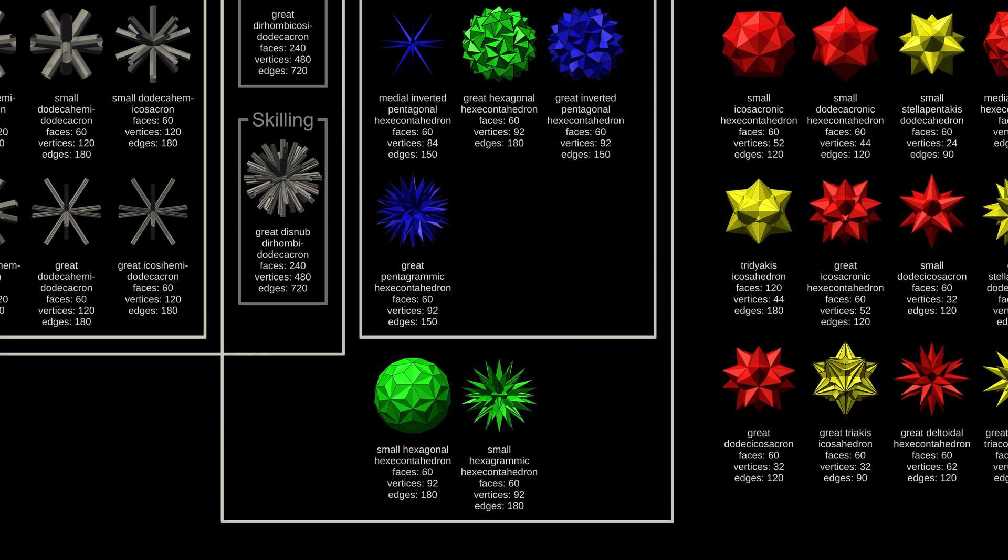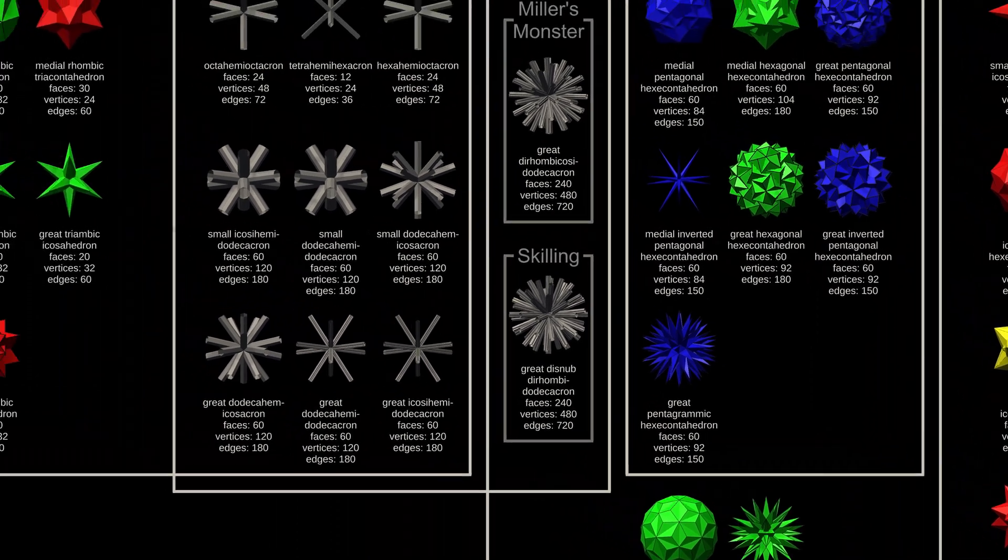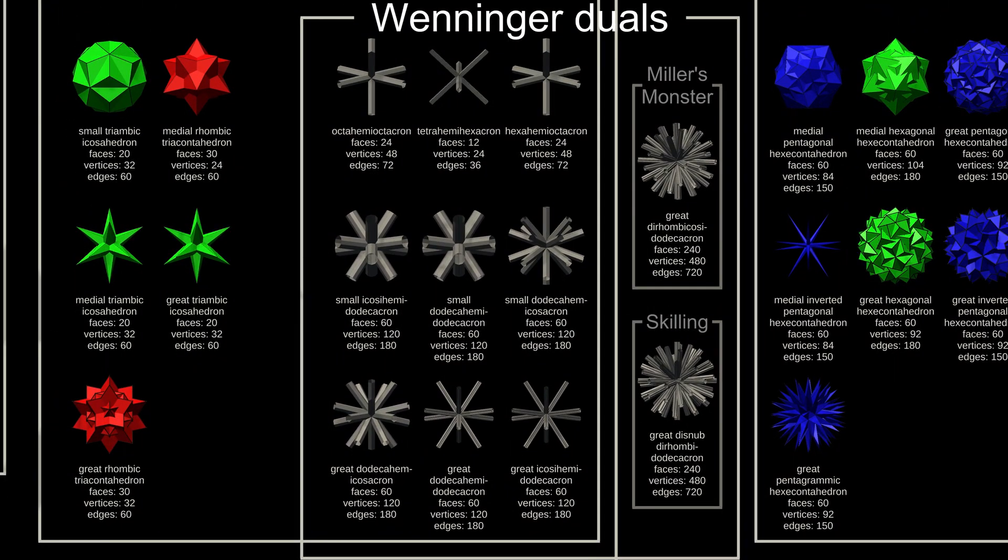The hemipolyhedra do not have duals in Euclidean space. The closest representations are the Wenninger duals, which I've shown in grey. Likewise, the dual of Miller's monster is another Wenninger dual, and the dual of Skilling's figure is also a Wenninger dual.